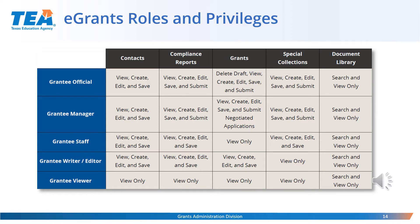When requesting access to eGrants, the correct CDN and vendor ID number will be needed. The vendor ID number must be a 10-digit number. For LEAs, it will usually begin with a 1 followed by the LEA's Federal Employment ID number. For a few charter schools operated by a university, the ID number will usually begin with a 3. The same 10-digit vendor ID number is also used to access ER for payment requests.